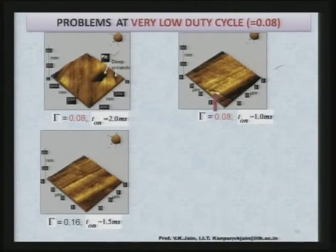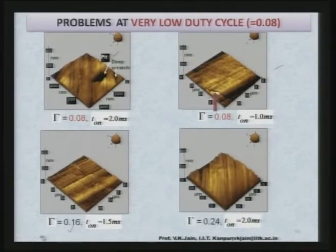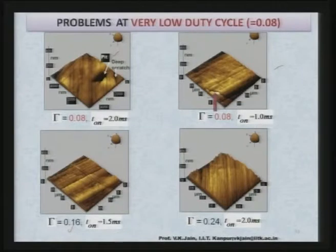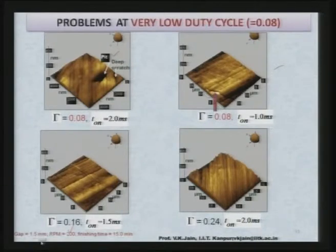If finishing is performed at a higher duty cycle of 0.16, those kinds of defects are not visible on the finished component. Going still higher in duty cycle, the surface roughness value may slightly increase, but defects can be overcome, as seen when performed at a duty cycle of 0.24. The gap in these machine finishing processes was maintained at 1.5 millimeter, revolution per minute was 200, and finishing time was 15 minutes.